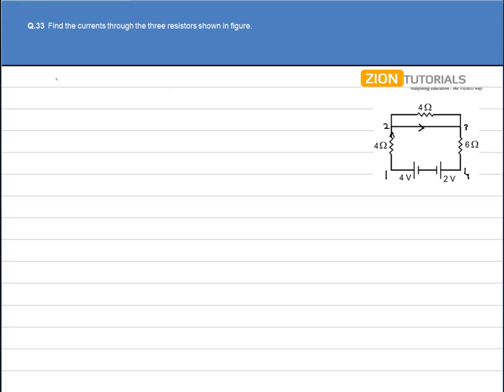So first of all, the current through this 4-ohm will be equal to zero. Now if the current through 4-ohm is zero,